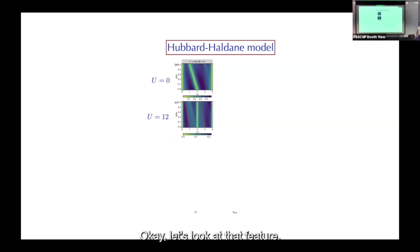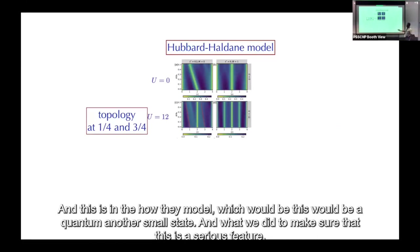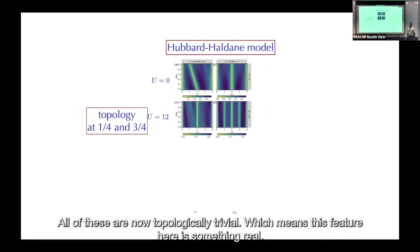So there's topology at one-quarter and three-quarters filling in the Haldane model — this would be a quantum anomalous Hall state. To verify this is a real feature, we set the Semenoff mass equal to one, which makes all states topologically trivial. The slope goes away and all these features disappear, confirming the one-quarter feature is something real.